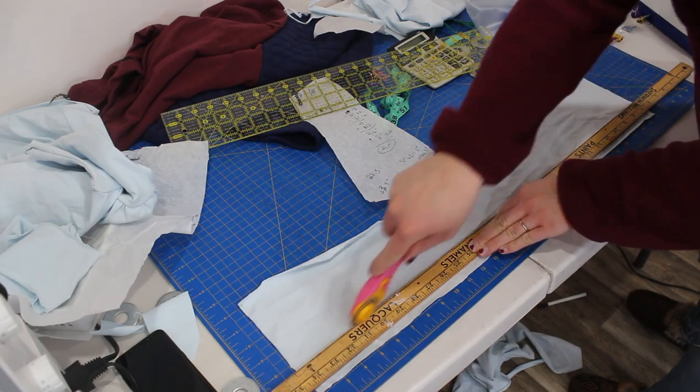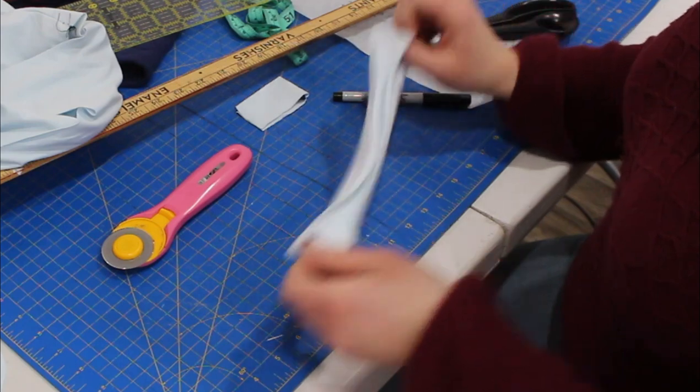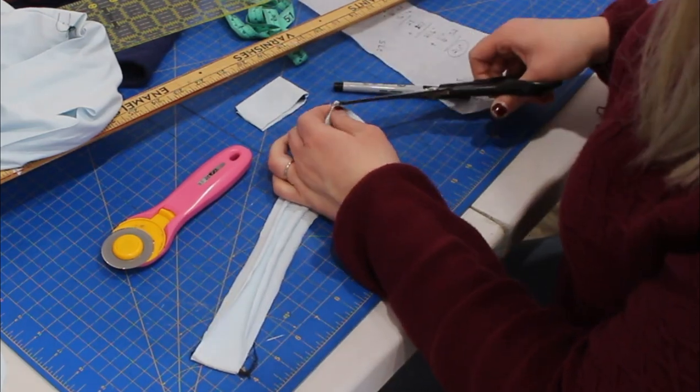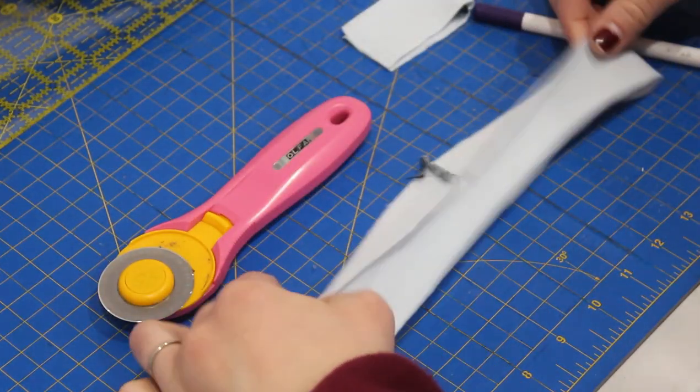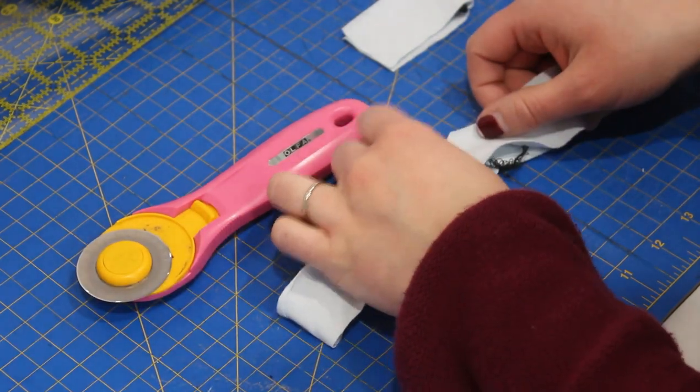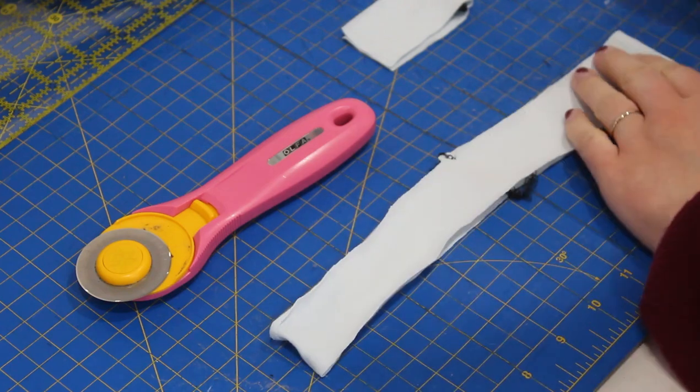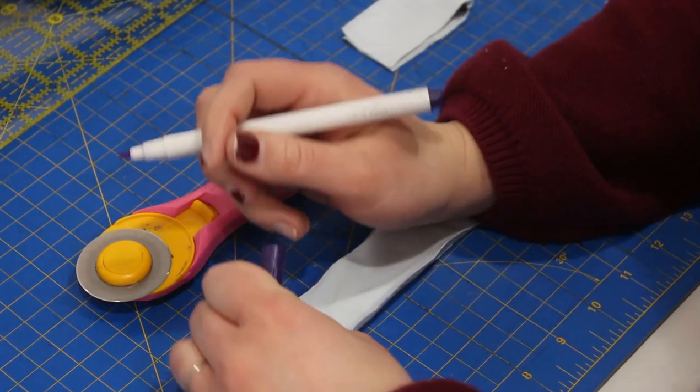Once you have that made, you're gonna sew it together in a loop and then just put it on, hold it up to your neckline to make sure it looks good with a little bit of stretch there.